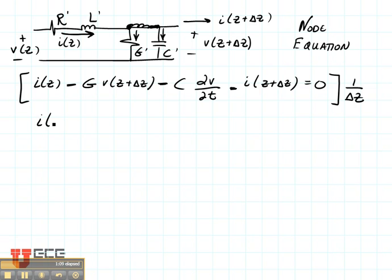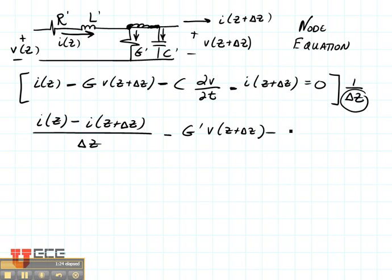So this is going to give me i of z minus i of z plus delta z, this whole thing divided by delta z because of this division over here, minus g prime v z plus delta z minus c prime dv dt. And that whole thing is equal to zero.